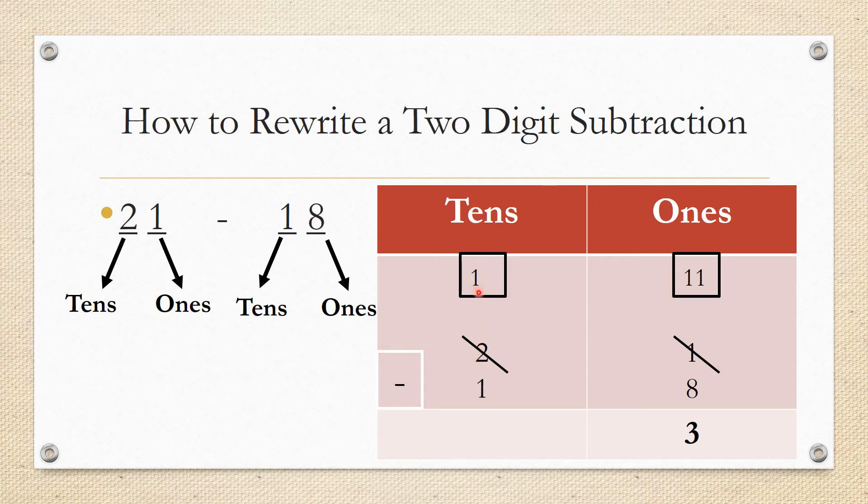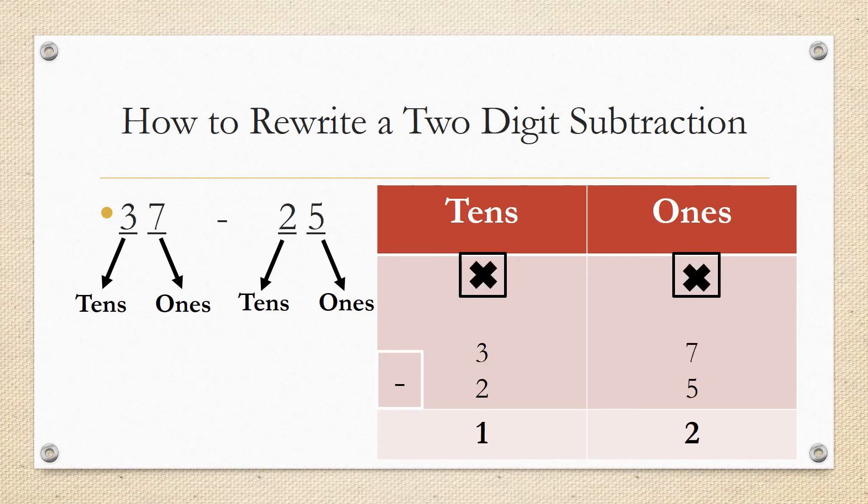Now 11 minus 8, can I do it? Yes, because 11 is bigger than 8. So 11 minus 8 is equal to 3, and 1 minus 1 is equal to 0, so I will not put anything. No need to write the 0.